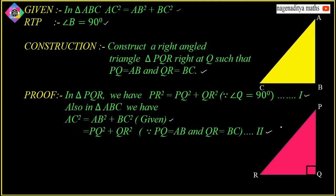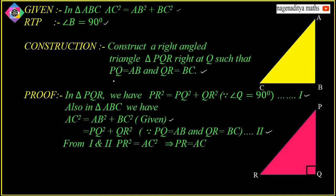From equation 1 and equation 2, we can clearly observe that PR² = PQ² + QR² and AC² = PQ² + QR². Hence from equations 1 and 2, PR² = AC², which implies PR = AC. We observe that in triangle ABC and triangle PQR: PQ = AB, QR = BC, and PR = AC.